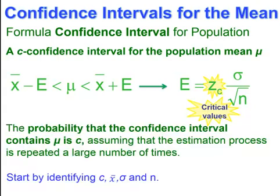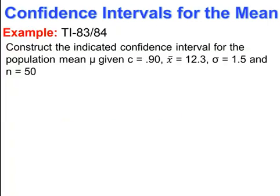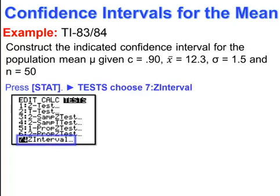The probability that the confidence interval contains the true population mean is based on the given level of confidence, assuming the estimation process is repeated a large number of times. To begin, identify your level of confidence, the sample mean, your standard deviation, and the sample size. We will be entering this information into our calculators.